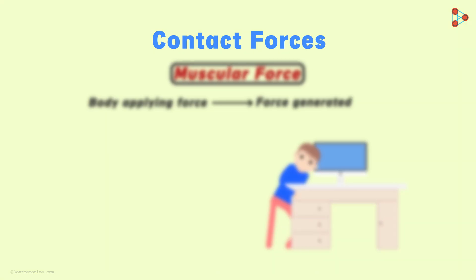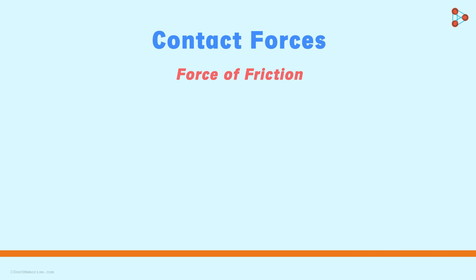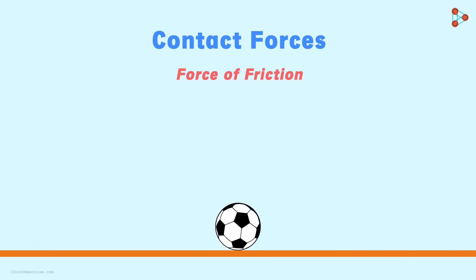Another contact force we can talk about is the force of friction. What is the force of friction? Try rolling a ball on a horizontal plane surface. You will notice that the ball gradually slows down after some time and eventually comes to a halt. Why does this happen? Why doesn't the ball continue to move in the same direction forever? The reason for its slowing down and ultimately stopping is the force that the surface applies on the ball when it is moving.